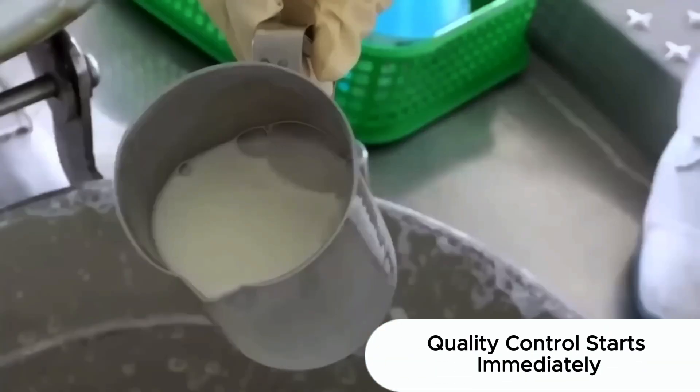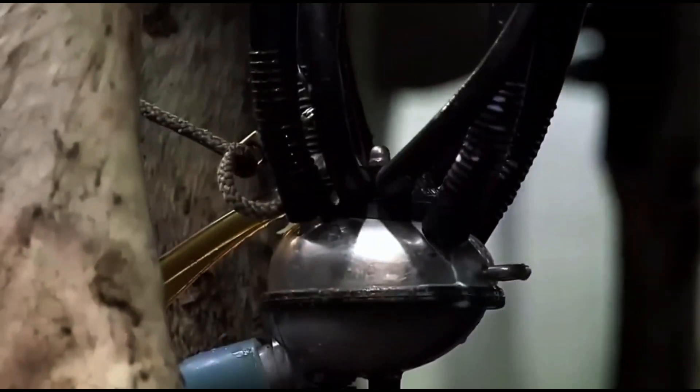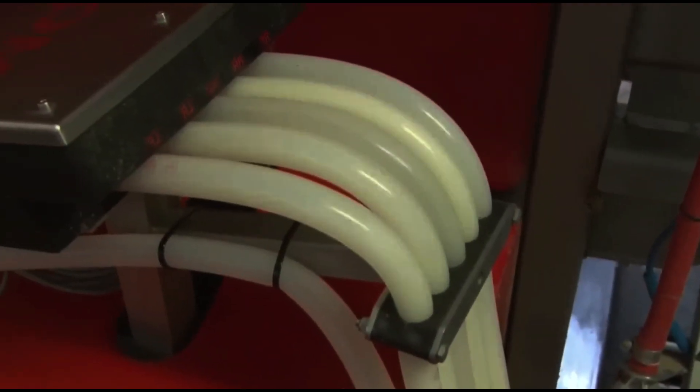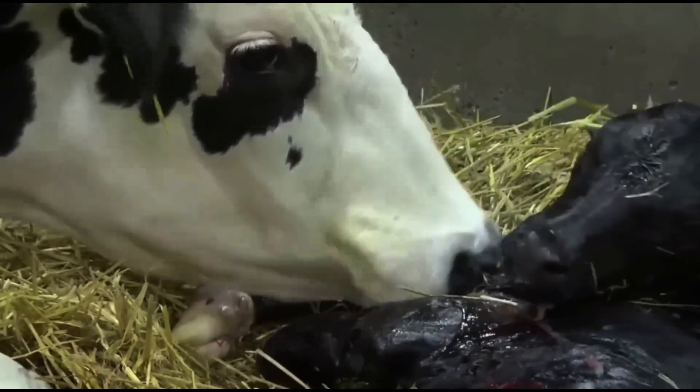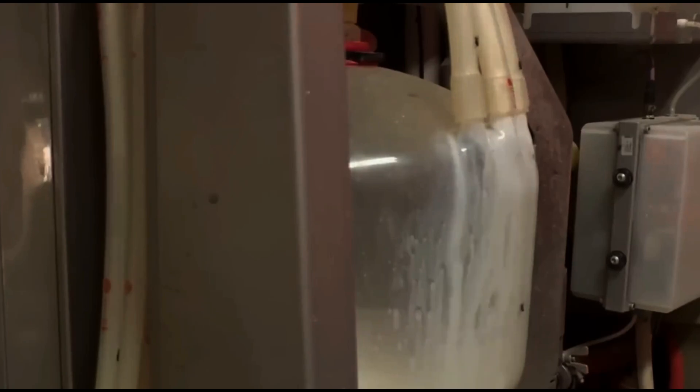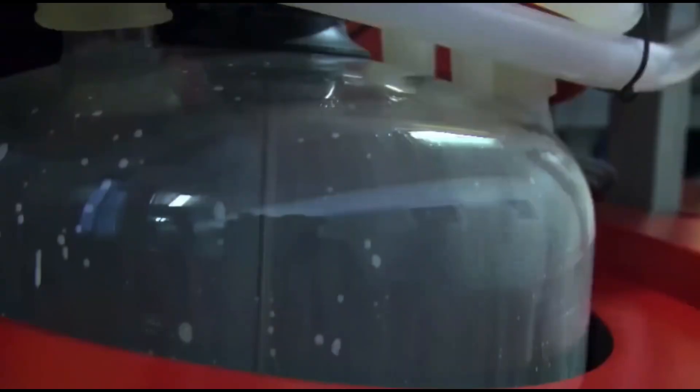Before the milk ever leaves the farm, it's tested. Samples are collected automatically and sent to laboratories, where they're analyzed for fat content, acidity, density, somatic cell count, and microbiological safety. It's especially important to ensure the milk contains no traces of antibiotics, an absolute requirement. Once approved, the milk is loaded into insulated tanker trucks. Each truck can transport up to 20,000 liters. Throughout the journey to the processing plant, temperature is tightly controlled and the route is tracked in real time. Freshness is the highest priority. No more than 12 hours may pass between milking and factory delivery.